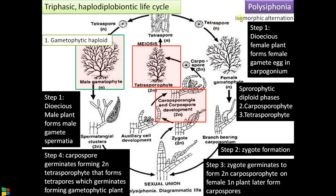One more point: Polysiphonia shows isomorphic alternation of generation — there is alternation between the gametophytic phase and the sporophytic phase. As you can see, the gametophytic haploid and sporophytic structures are all morphologically similar, which is why this is called isomorphic alternation of generation.